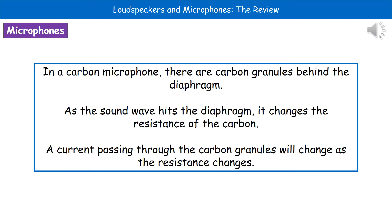The second type of microphone is a carbon microphone. Behind the diaphragm are granules of carbon. As the sound wave hits the diaphragm, the resistance of the carbon changes, which means a different current passes through as the resistance varies. When the resistance is high there is only a low current, but when the resistance is low the current is much higher, and that is translated by the computer into the sound produced.